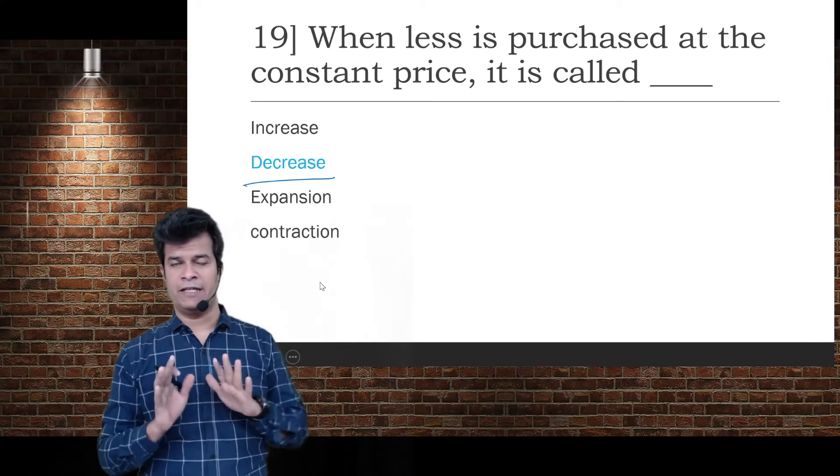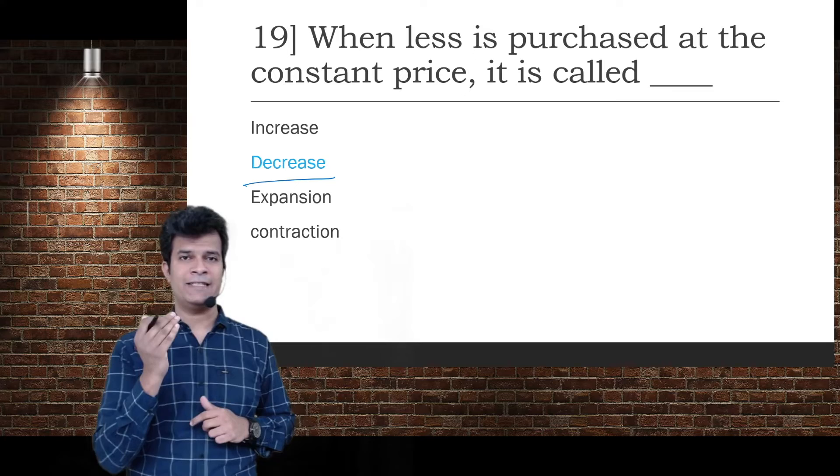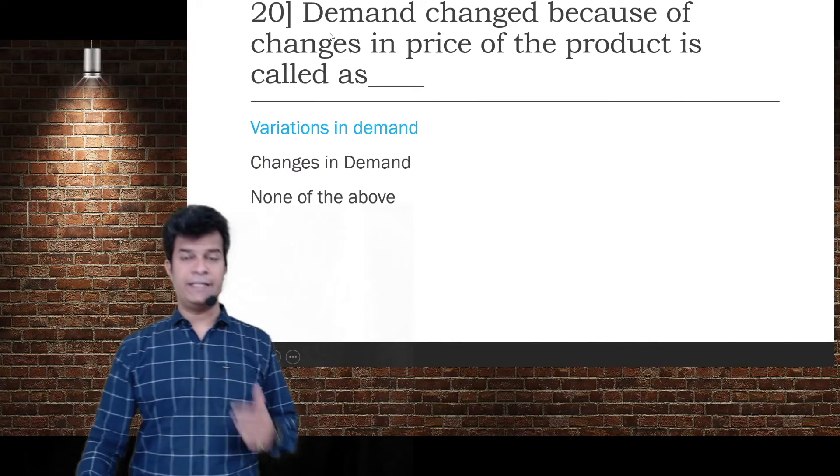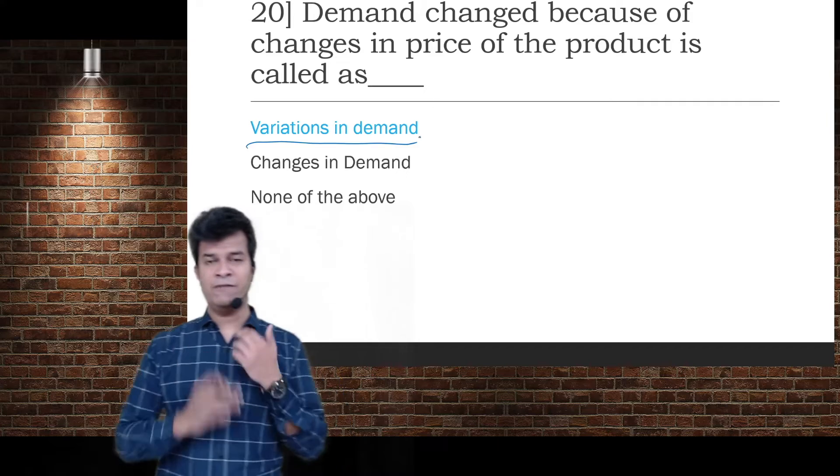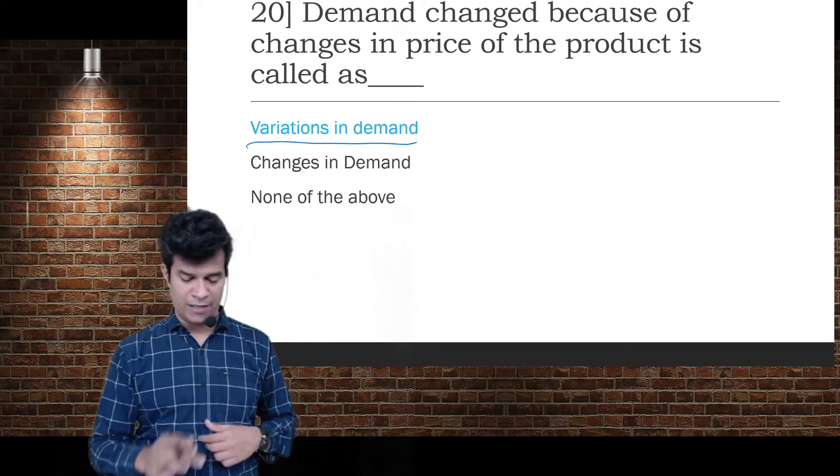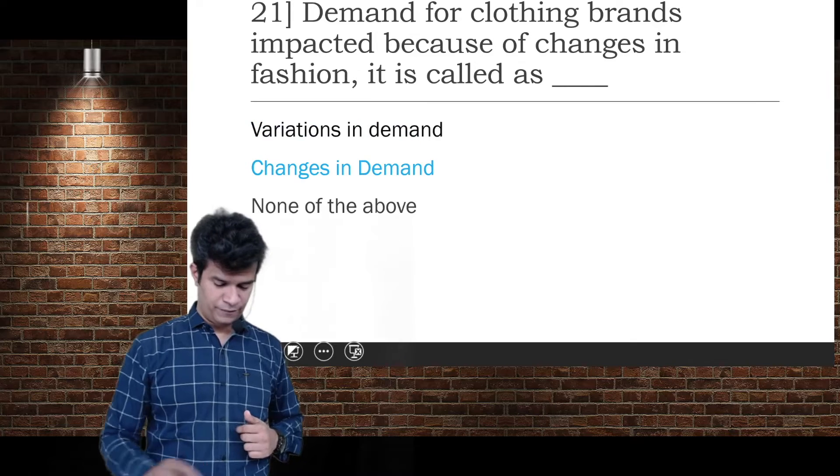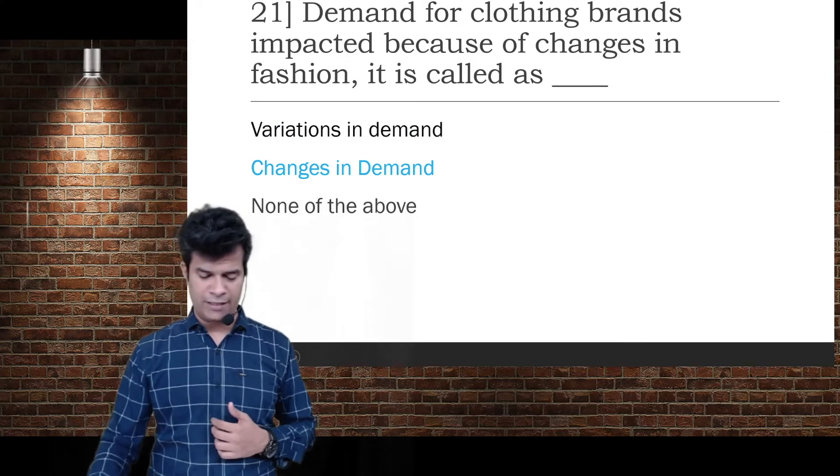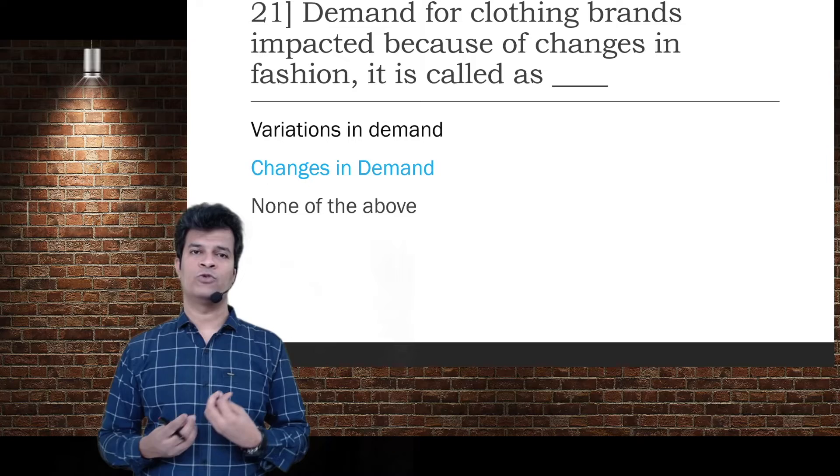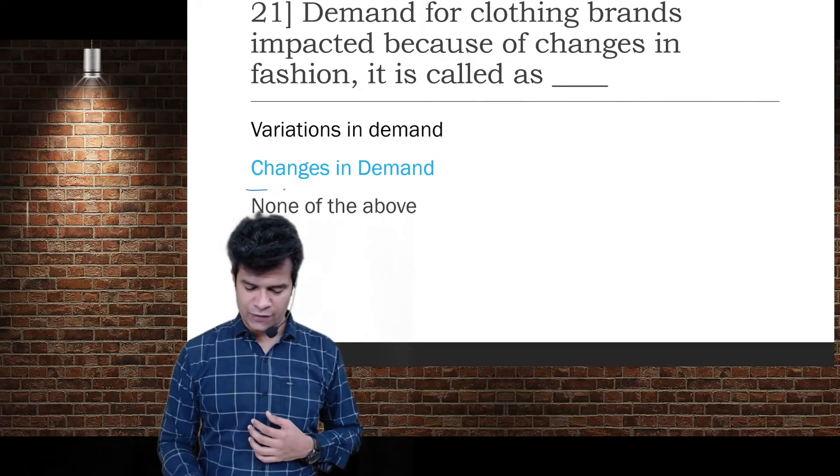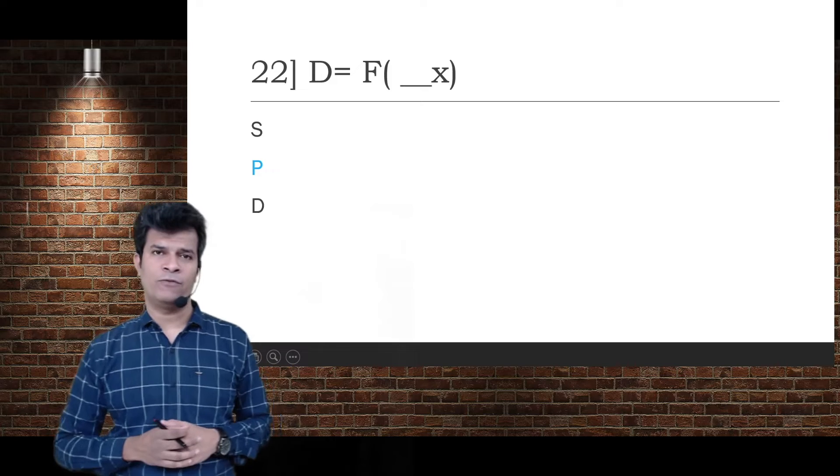Demand changed because of changes in price of the product is called variations in demand. Demand for clothing brands impacted because of changes in fashion - when fashion changes affecting a garment brand, it will be called changes in demand because it's not due to price but other factors.